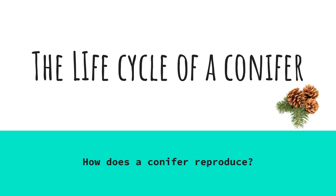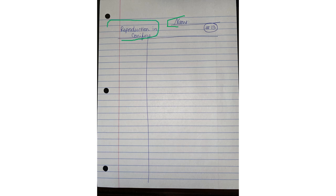Today we're going to be talking about the life cycle of a conifer, which you'll see in just a minute. Basically, this means a tree that reproduces using cones instead of flowers. So this is going to be notes 13. Before you move forward in the video, just make sure you have either the printed off notes, something to write with, or a piece of notebook paper and something to write with. If you're doing the handwritten notes, it should look something like this — you'll have your name on top. Reproduction in conifers is the title. You want to have your divider line here and notes number 13 in the corner.